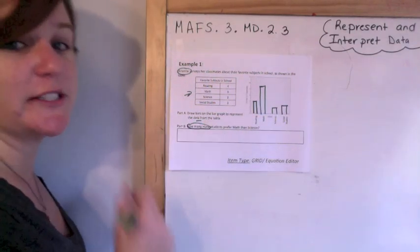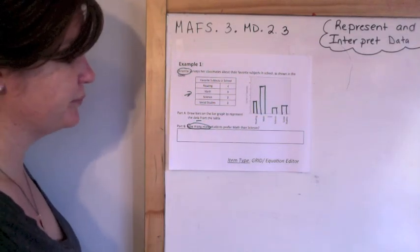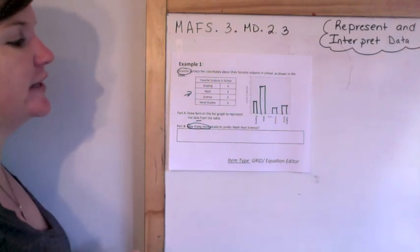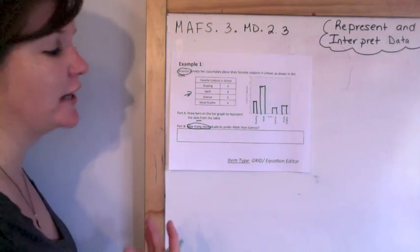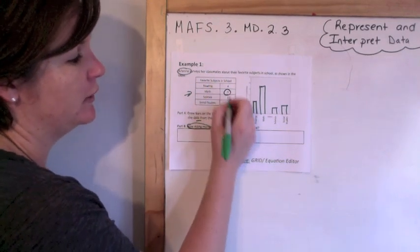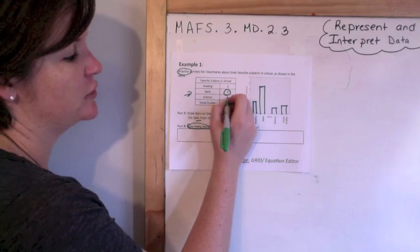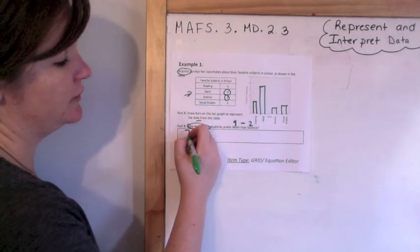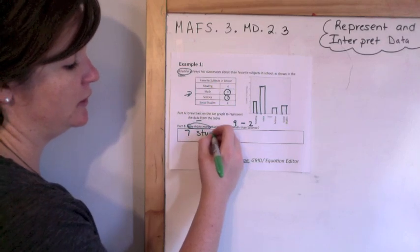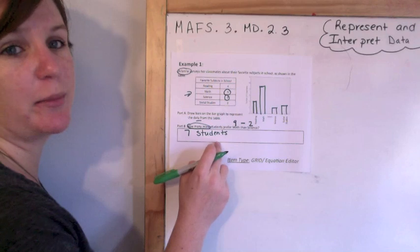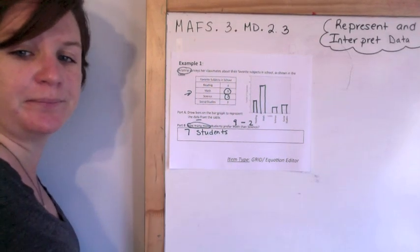So I did part A. Part B: how many more students prefer math than science? How many more means that I subtract. So math, how many students prefer math? Nine. How many students prefer science? Two. So nine minus two equals seven students.